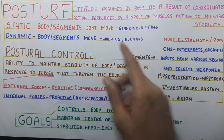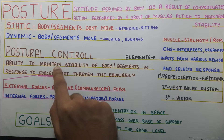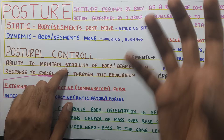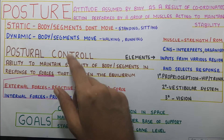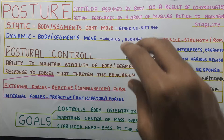Now, what is postural control? It is basically the ability to maintain the stability of the body or its segments in response to the forces that threaten the equilibrium. Stability means maintaining the line of gravity and center of gravity within the base of support. So your ability to maintain that, irrespective of the forces put on you — whether external or internal — that is postural control. The equilibrium is threatened by two types of forces: external and internal.